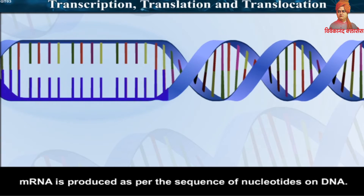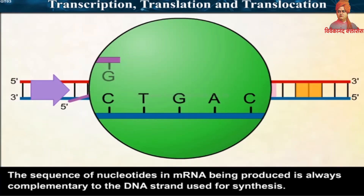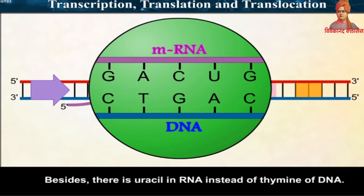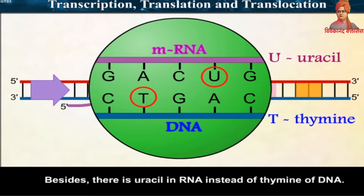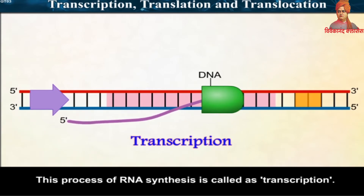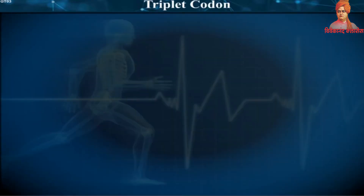mRNA is produced as per the sequence of nucleotides on DNA. Only one of the two strands of DNA is used in this process. The sequence of nucleotides in mRNA being produced is always complementary to the DNA strand used for synthesis. In RNA, there is uracil instead of thymine found in DNA. This process of RNA synthesis is called transcription.